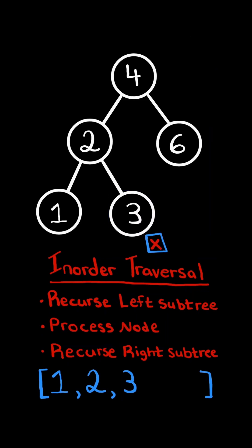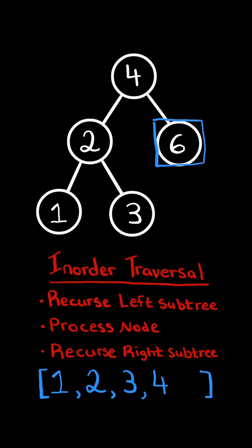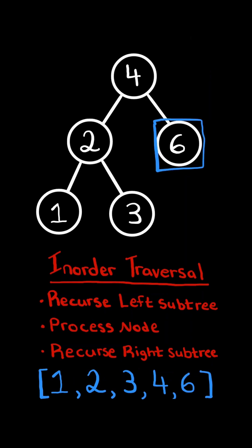But once again it's null, so we move up the stack and process the root node, and recurse on its right subtree. We recurse on its left subtree, which is null. We then process the parent node, and finally recurse on its right subtree, which is null.